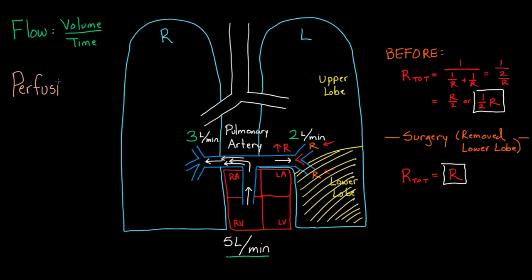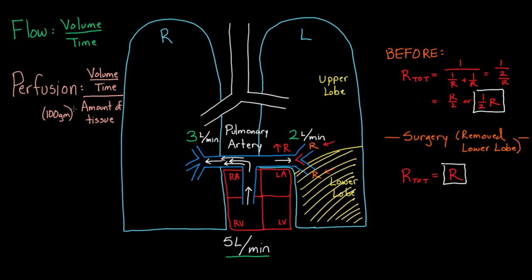Perfusion is volume over time divided by amount of tissue. You can measure tissue as a volume or a weight — I'll use 100 grams here, which is a common unit. So let's think about the scenario with the new numbers — two liters per minute to the left and three liters per minute to the right — and calculate perfusion for each side.